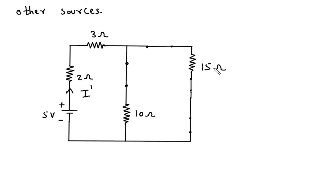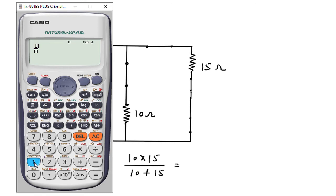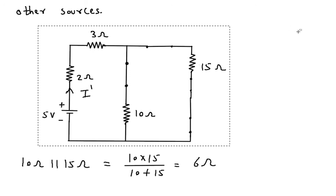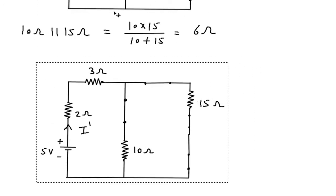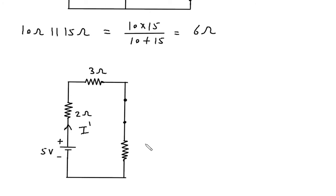Here we can see this 10 ohm and 15 ohm are connected in parallel. So 10 ohm parallel with 15 ohm will be 10 into 15 divided by 10 plus 15, which equals 6 ohm. So we can replace these resistances with a 6 ohm resistor.